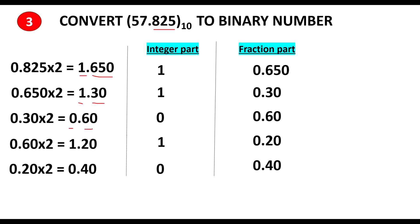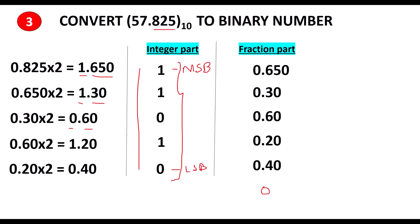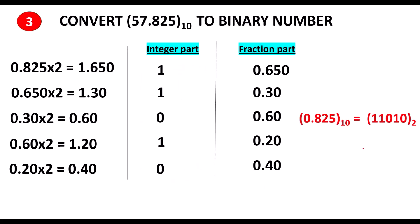Normally you repeat this process till the fraction part becomes 0, but in this problem it keeps going repeatedly and there will be no 0 in the fraction part. So we stop here. Reading the integer parts from top to bottom, the MSB comes first and LSB last. For 0.825 decimal, we get the binary equivalent as 1 1 0 1 0.